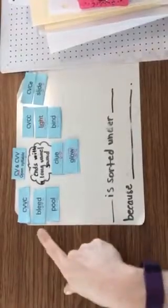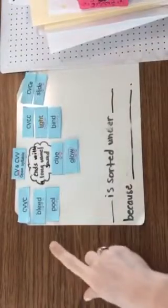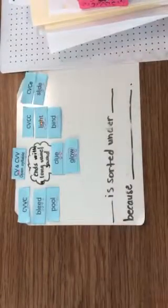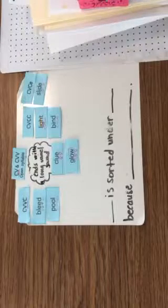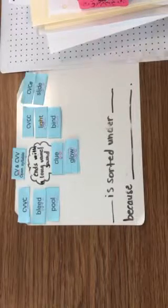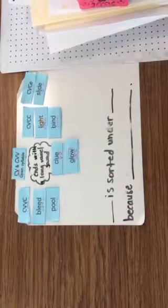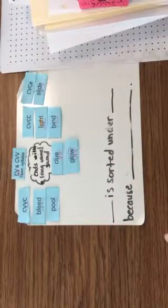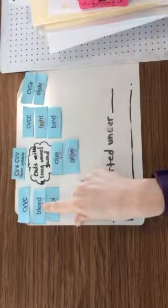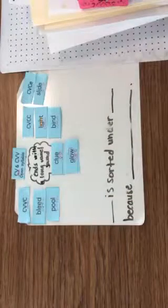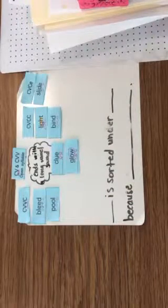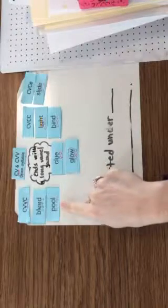So we have the word bleed and the word pool. Both of the vowel sounds are different, but the spelling pattern is consonant, vowel, vowel, consonant. In bleed, the long E sound is being made with both E's together. And in the word pool, the long U sound is made with two O's together.